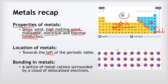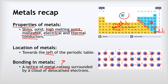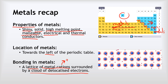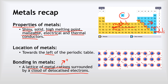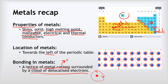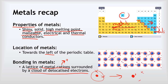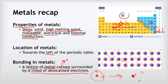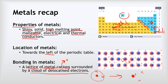In terms of their bonding, we describe the bonding in metals as a lattice — a 3D grid of metal cations, which are positive ions — surrounded by a cloud of delocalized electrons. It's the attraction between those positive cations and the negative electrons that forms the bond. The electrons can move freely wherever they like, as you can see in this animated gif, and that's why metals can conduct electricity — because those electrons are free to move.